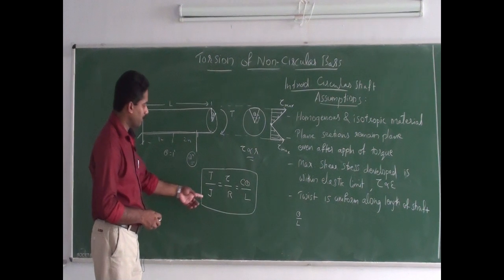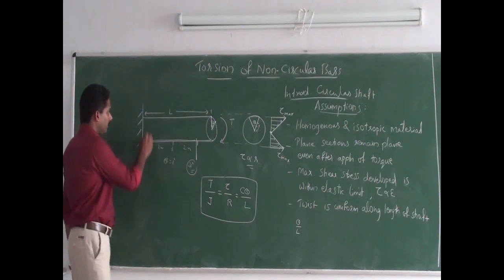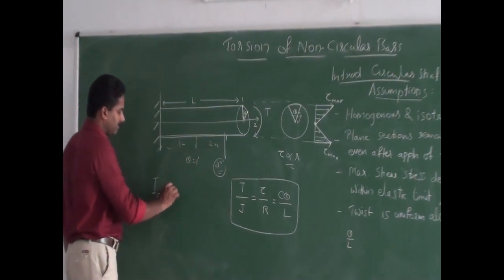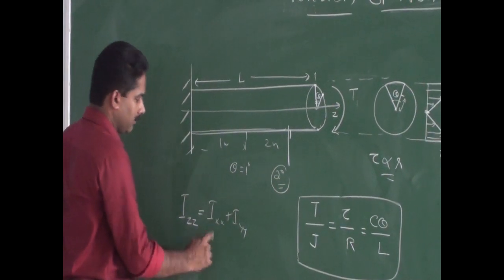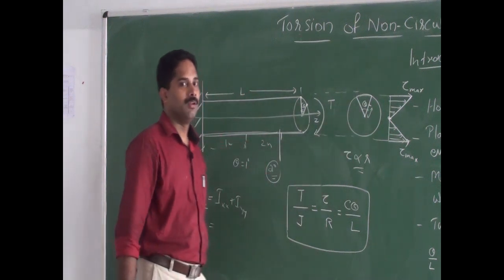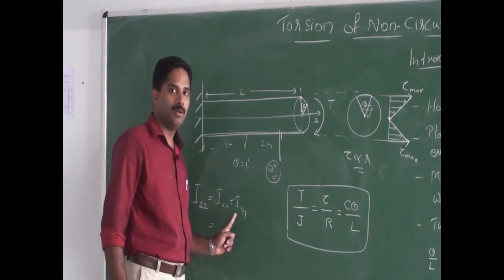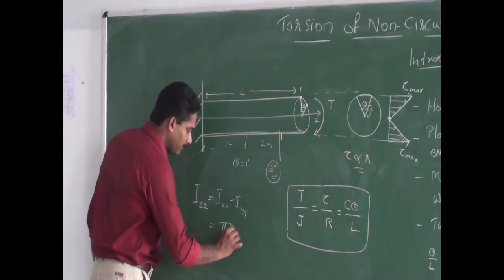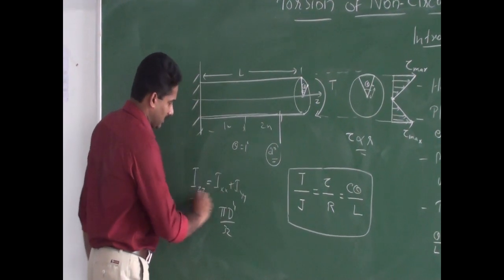The polar moment of inertia, Izz, equals Ixx plus Iyy. For a circular shaft, Ixx equals Iyy equals pi d raised to 4 by 64, so Izz equals pi d raised to 4 by 32. This is the equation for polar moment of inertia about the z-axis.